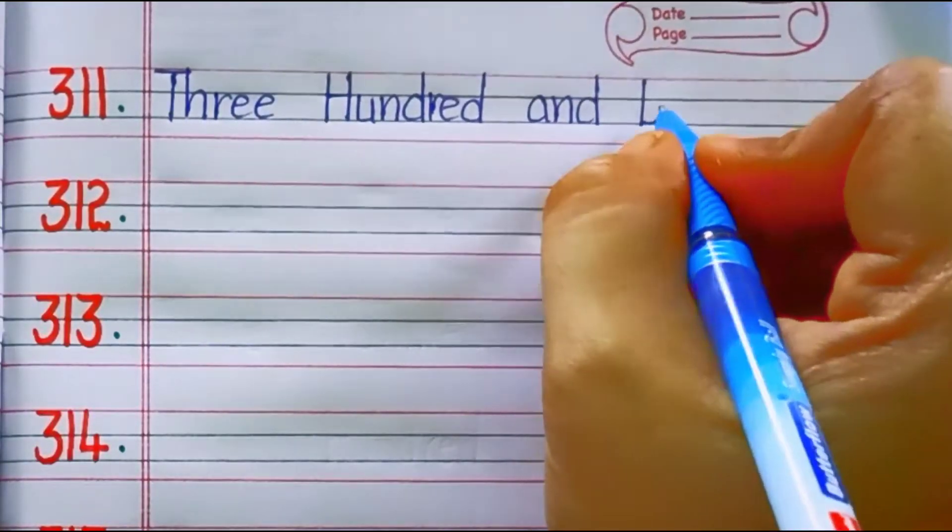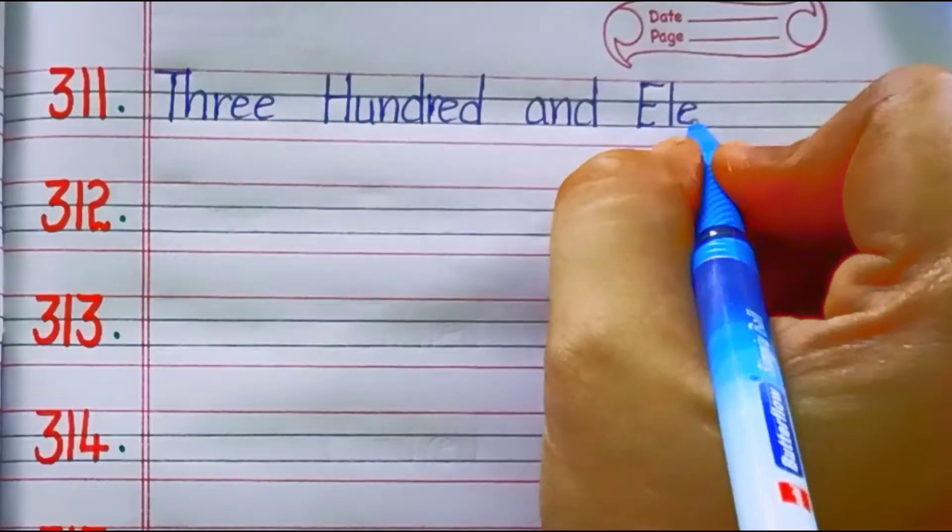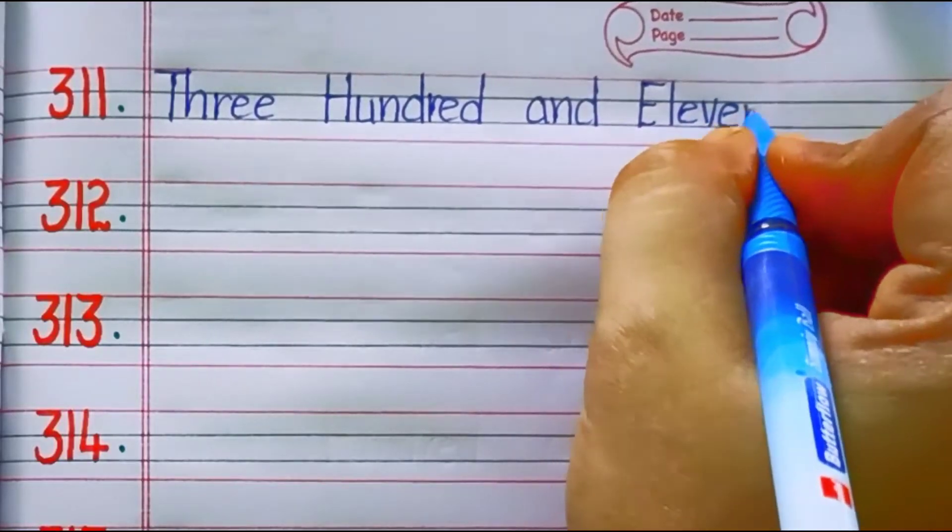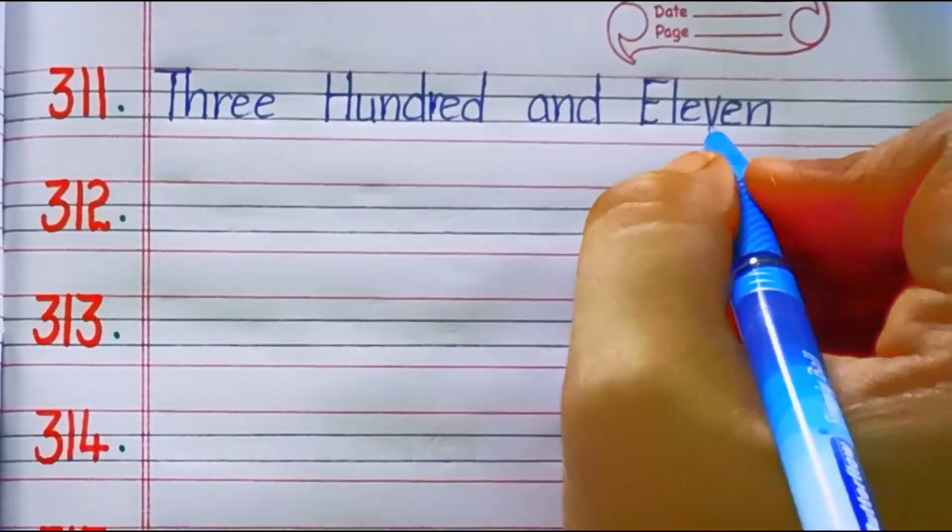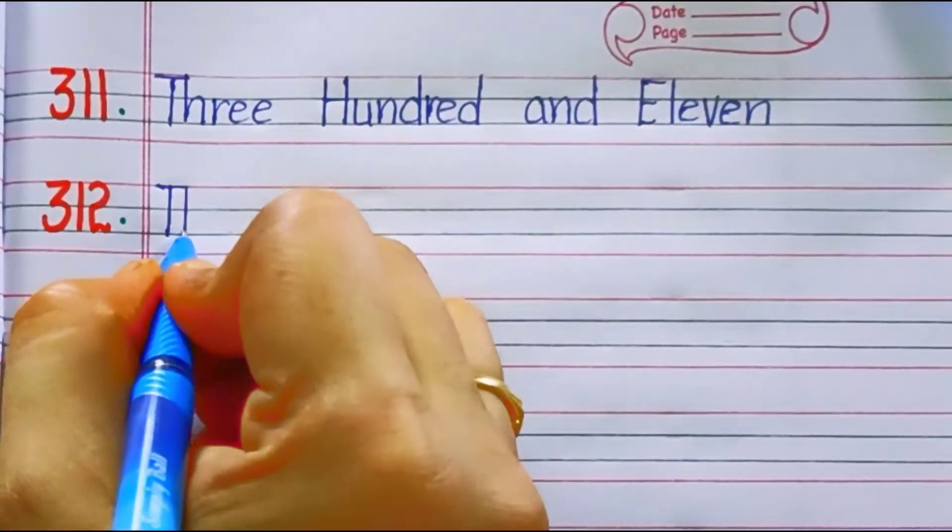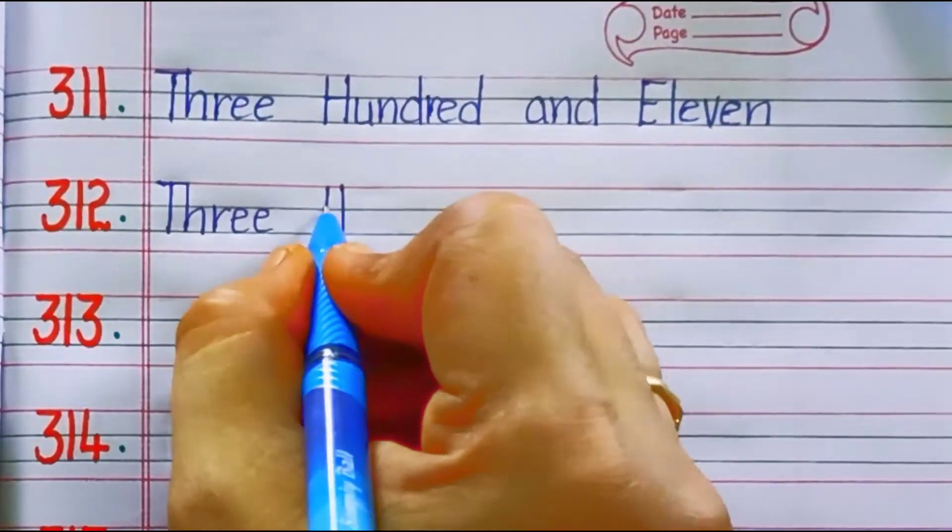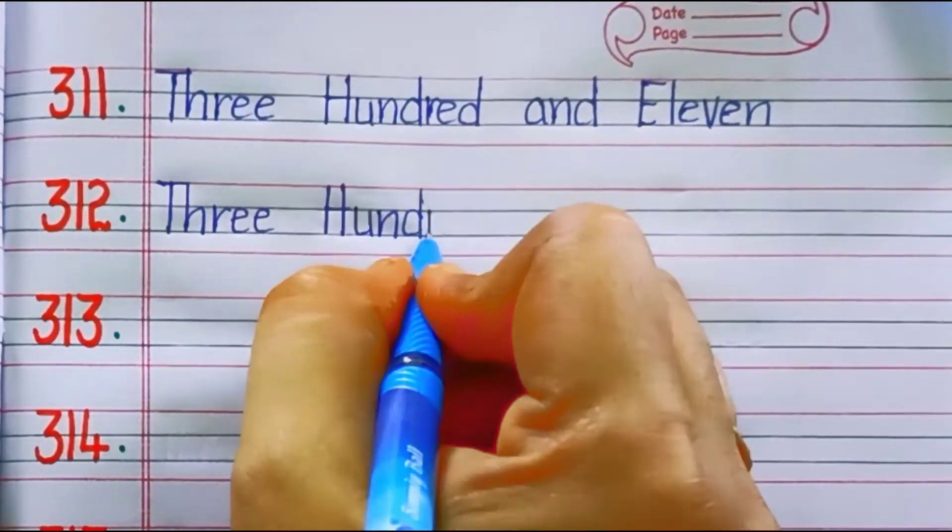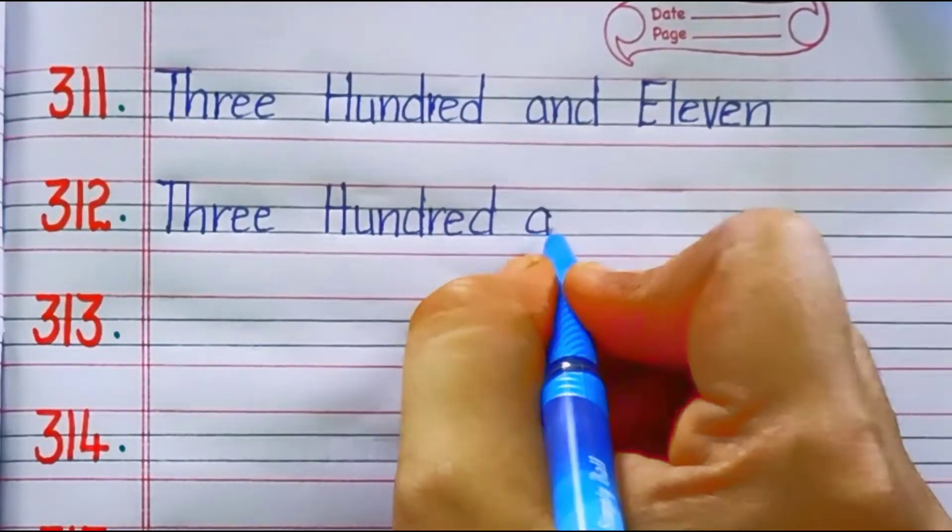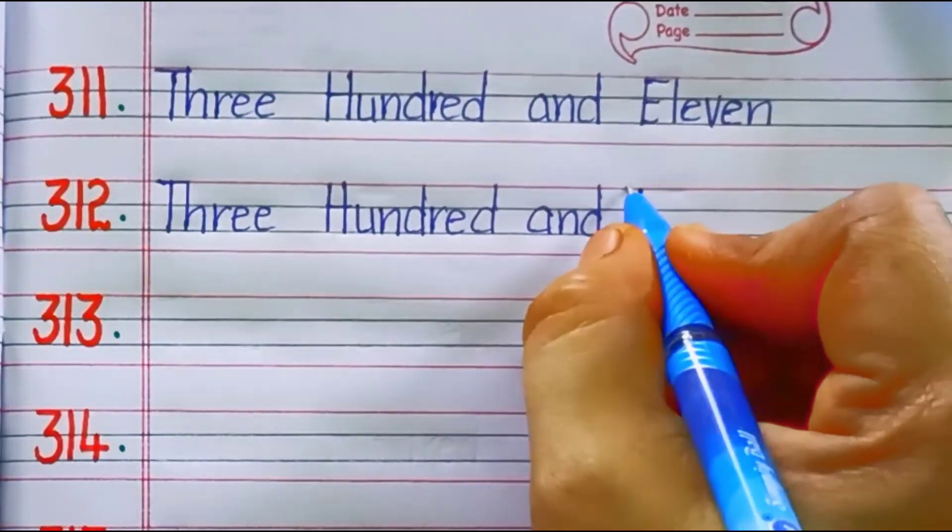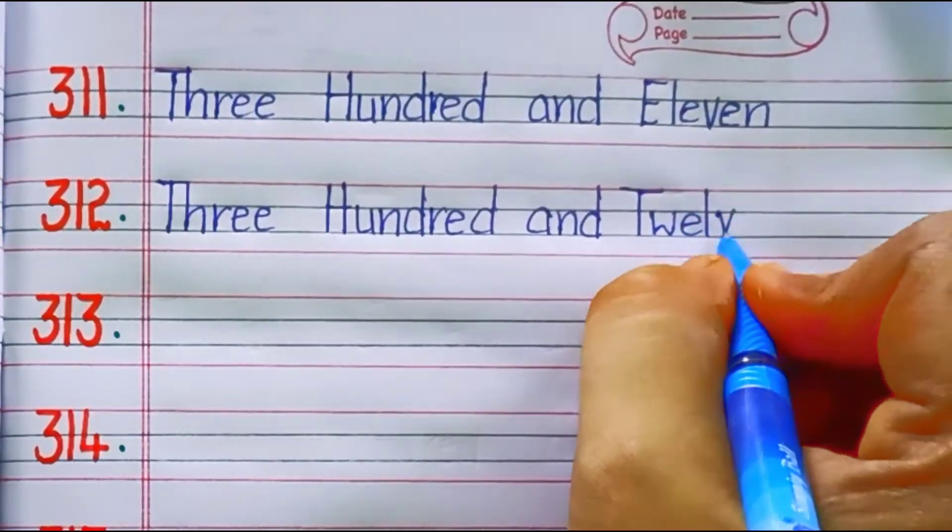311. Three hundred and eleven. E-L-E-V-E-N, eleven. 312. Three hundred and twelve. T-W-E-L-V-E, twelve.